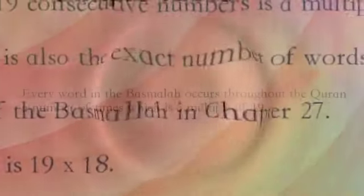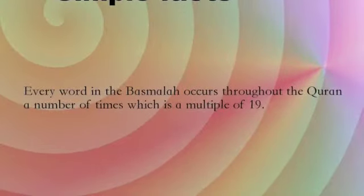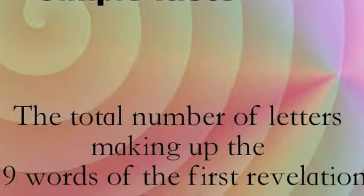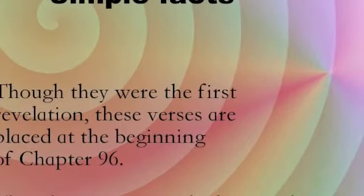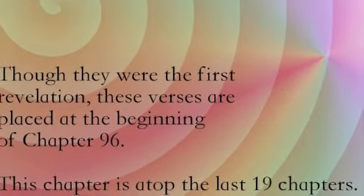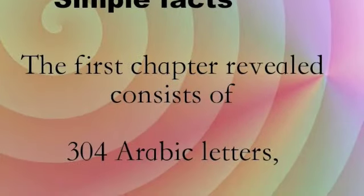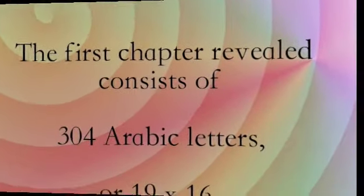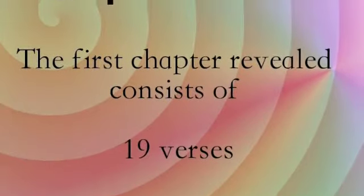Every word of the opening statement, the Basmala, occurs as a multiple of 19. The first revelation was 19 words. The number of letters in those 19 words is 76, or 19 times 4. The first chapter revealed is among the last 19 chapters, consists of 19 times 16 letters — 304 Arabic letters — and consists of 19 verses.